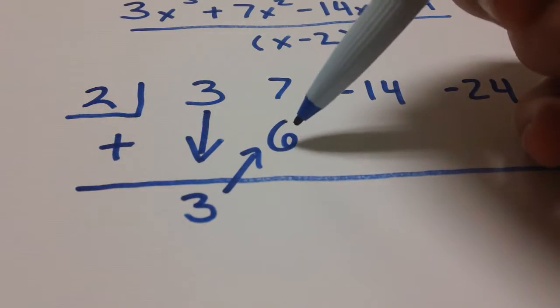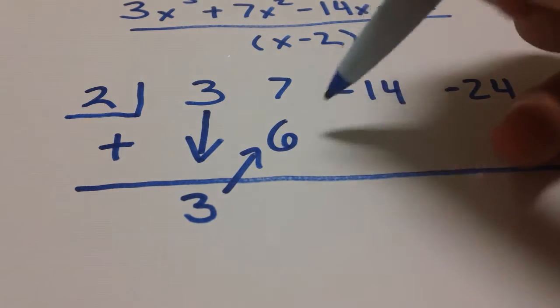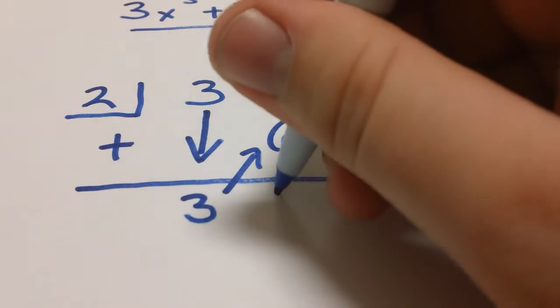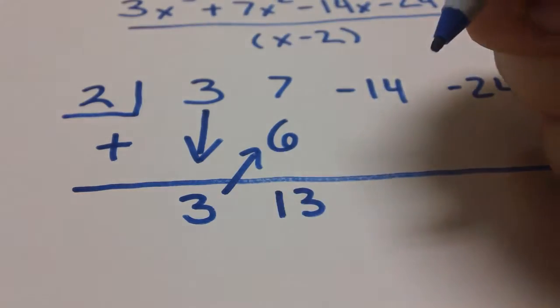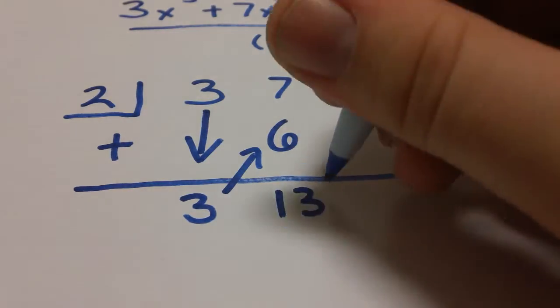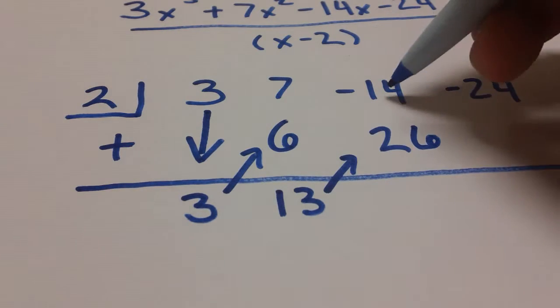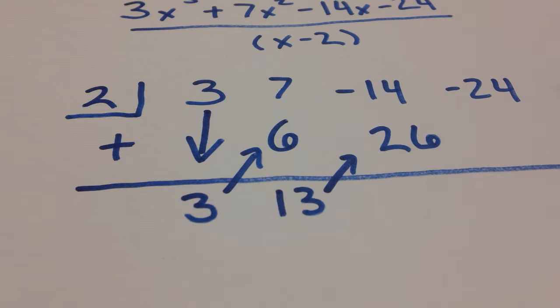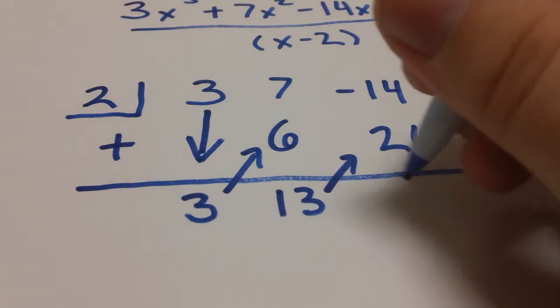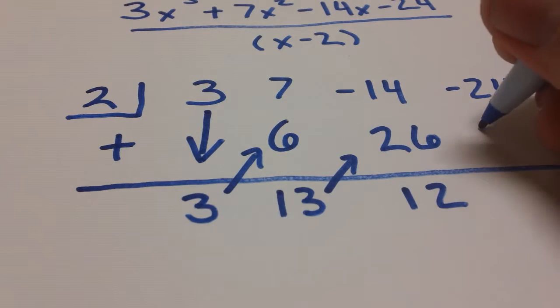So seven plus six is going to give us 13. Now we multiply 2 and 13 and we get 26. Negative 14 plus 26 is going to give us a positive 12. Positive 12 times positive 2 will give us a 24. Negative 24 plus positive 24 will give us zero.